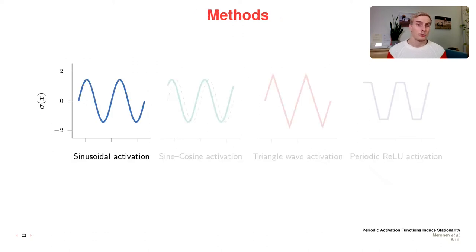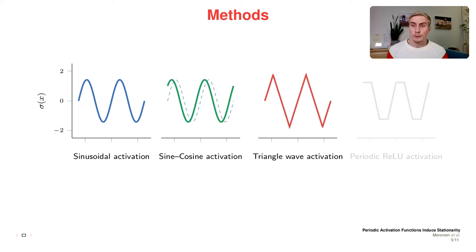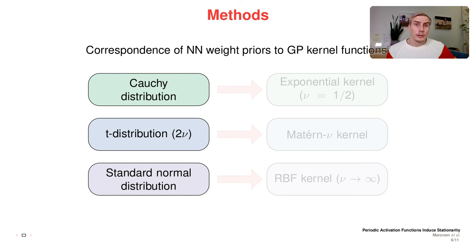Our work is not only limited to sinusoidal activations, but we also show that the same theory applies for all kinds of periodic activation functions. For example, we have experimented with the sine-cosine activation, which is inspired by random projections, a triangle wave activation, and a new periodic ReLU activation. We show that there's a direct correspondence from the prior on the neural network weights to the Gaussian process kernel.